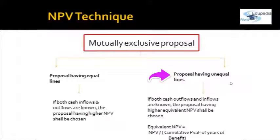For example, suppose you have to buy a photostick machine — it could be Canon or Samsung. Both have different outflows; one is more expensive but provides cash inflows for six years, while the other provides inflows for only three years, with a lower outflow. The one which gives more benefit is to be taken. For equal lives, the proposal having the higher NPV will be chosen.